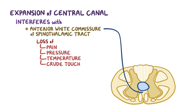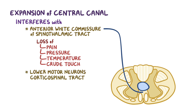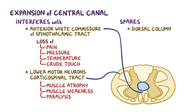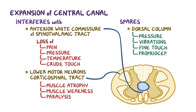As the central canal cavity expands, it damages the lower motor neurons connected to the corticospinal tract, which leads to muscle atrophy, muscle weakness, and paralysis. Syringomyelia usually spares the dorsal column, so sensations of pressure, vibrations, fine touch, and proprioception typically remain intact.